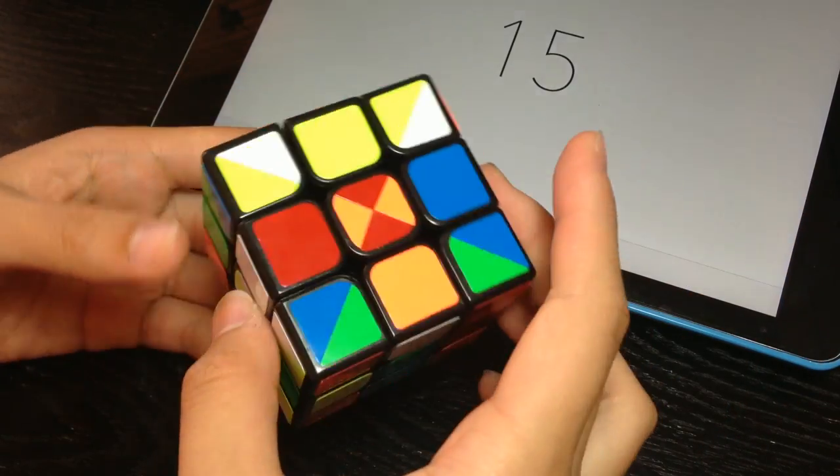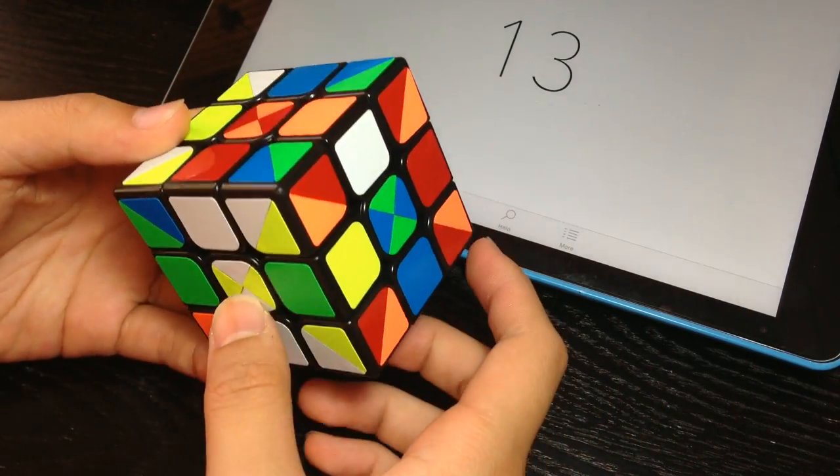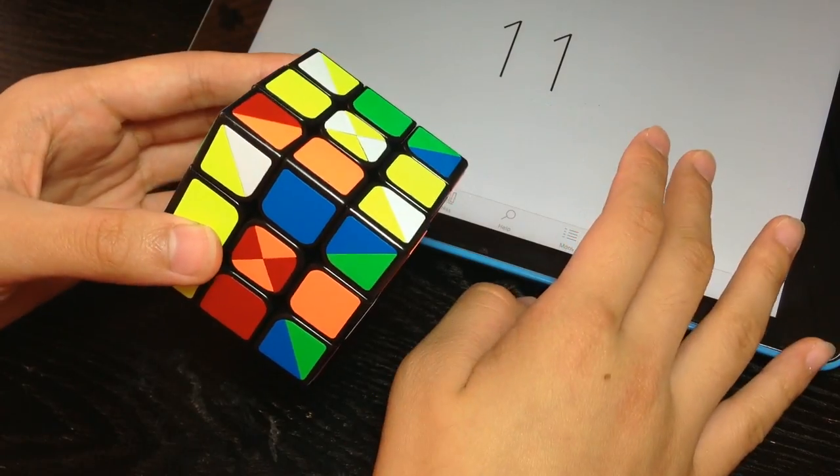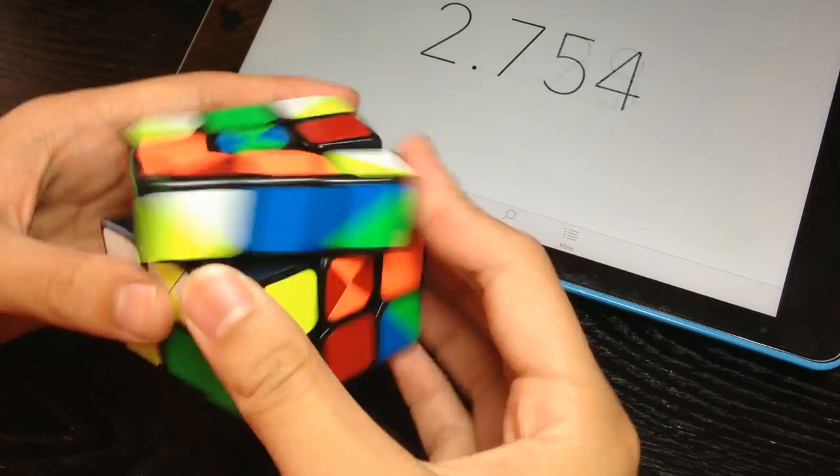After a while though I realized that if you use the corner as a guide you can orient the centers according to that and place your cross pieces and pairs in like that.